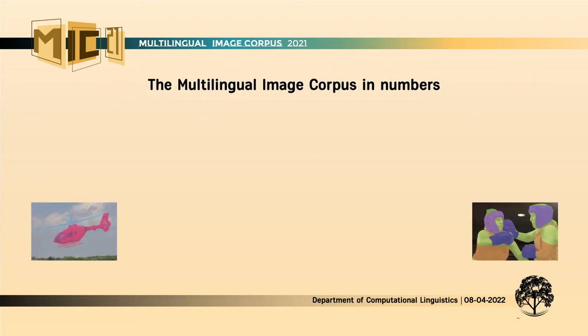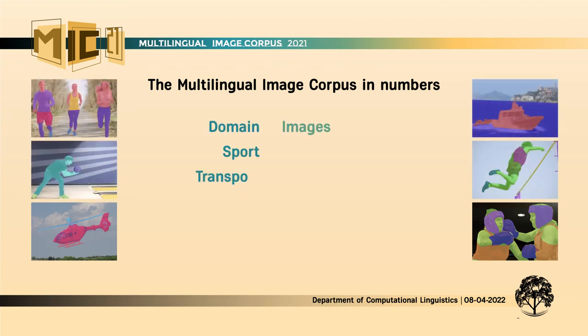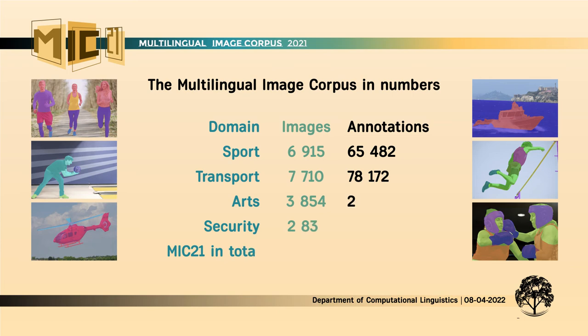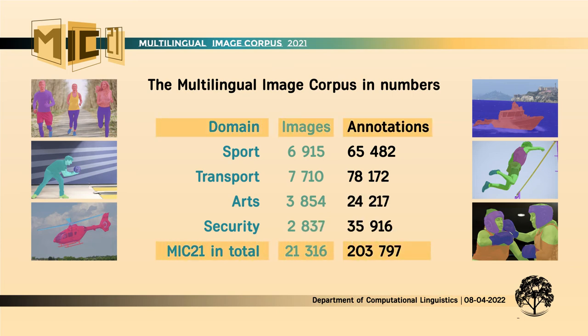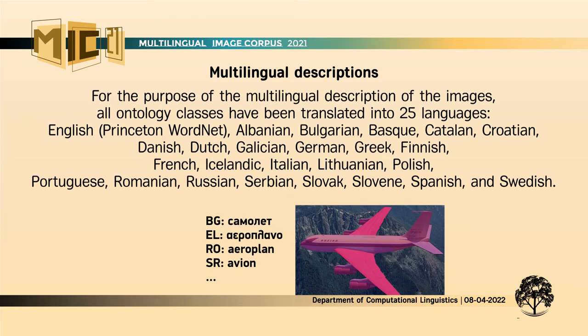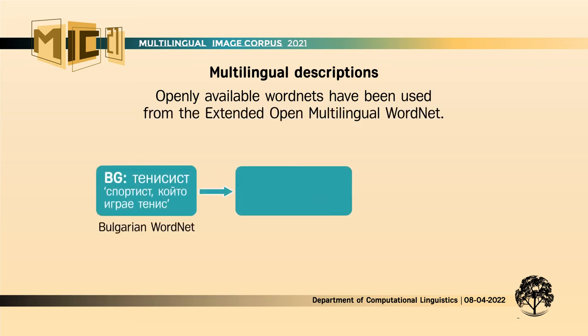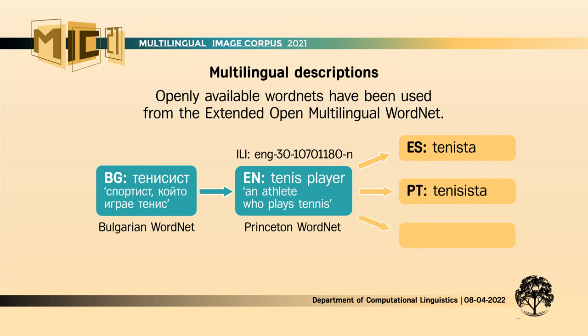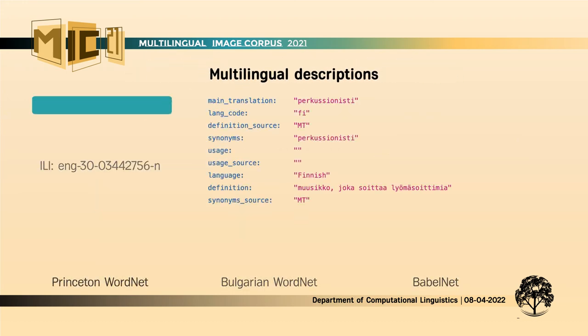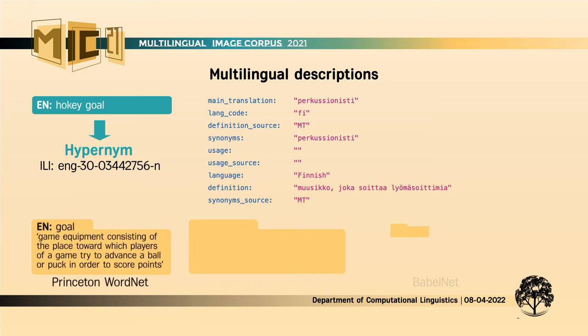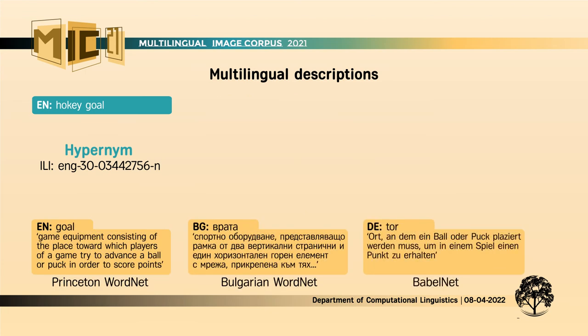Of the 253,980 automatically generated segmentation masks, 194,212 were manually adjusted. The Multilingual Image Corpus provides fully annotated objects within images with segmentation masks classified according to an ontology, offering data to train models specialized in object detection, segmentation, and classification for the purpose of multilingual image description. All ontology classes have been translated into 25 languages. For translation, openly available WordNets from the Extended Open Multilingual WordNet were used. The labels of classes, their synonyms, and definitions of concepts, as well as some examples, have been translated. In some cases, BabelNet or machine translation is also used when the ontology class is not present in the Princeton WordNet.